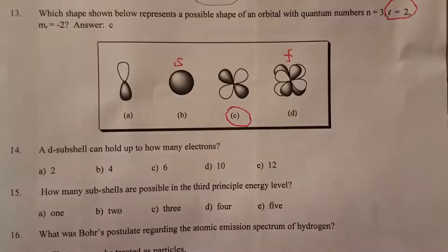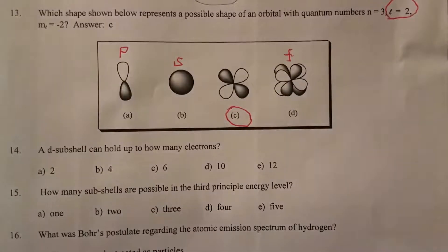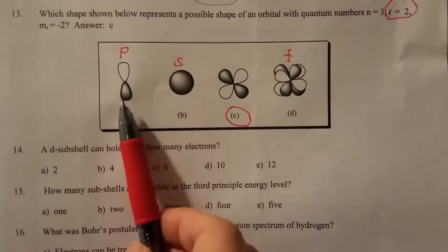And this is definitely a s subshell. And this definitely is a p subshell. So the p orbital, more accurately. So that's the p orbital.